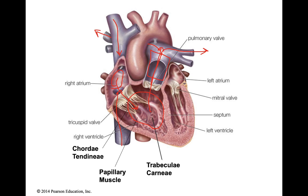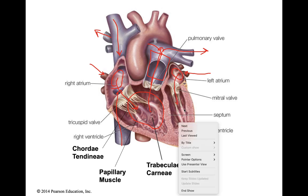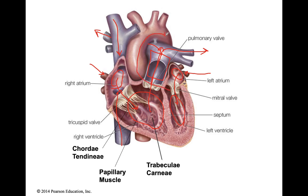Veins are vessels that bring blood towards the heart. When you go to the lungs, you drop off CO2, you pick up oxygen, and you bring that oxygenated blood back into the heart using pulmonary veins. That brings the blood back into the left atrium. The left atrium will then pump the blood down into the left ventricle.